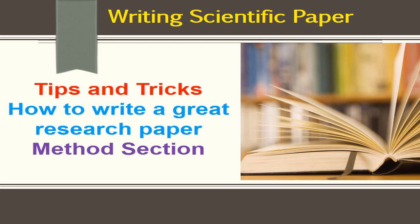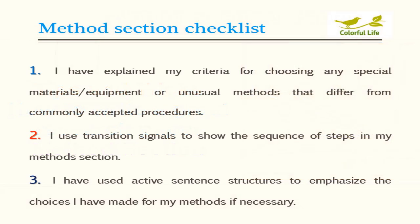When you write the method section, you should follow these steps to have a great method section. Step 1: I have explained my criteria for choosing any special materials, equipment, or unusual methods that differ from commonly accepted procedures. Step 2: I use transition signals to show the sequence of steps in my methods section.